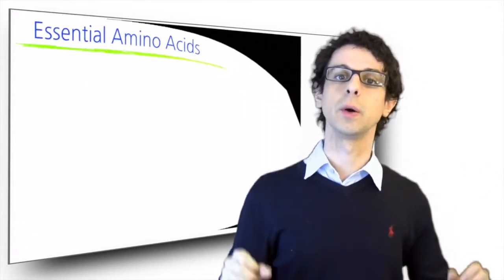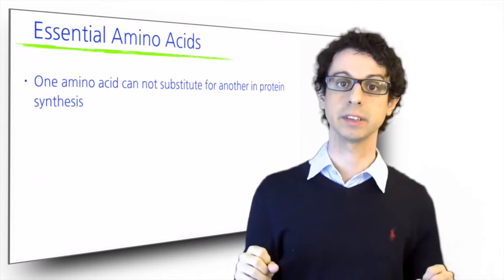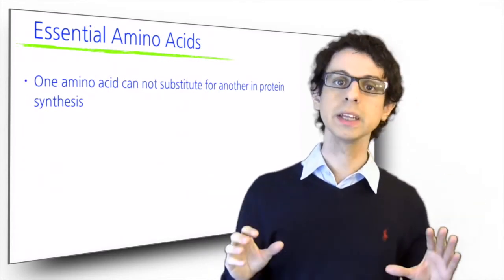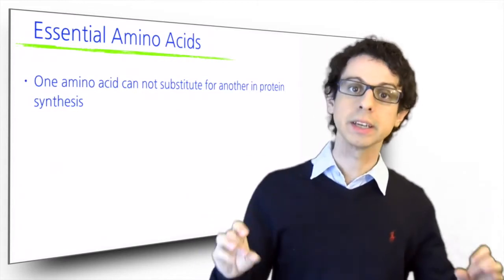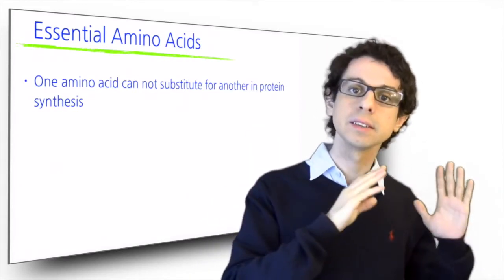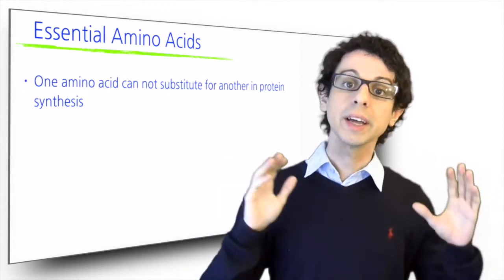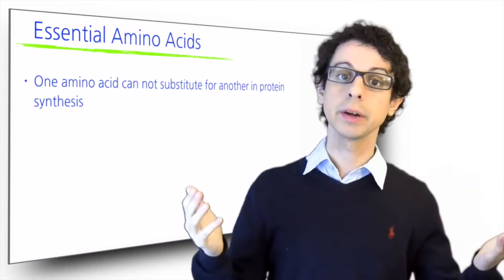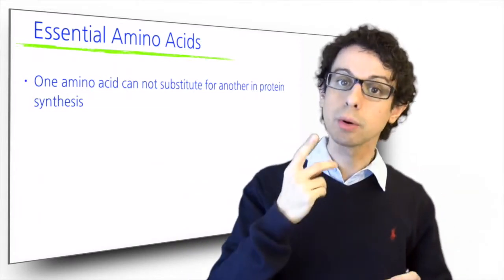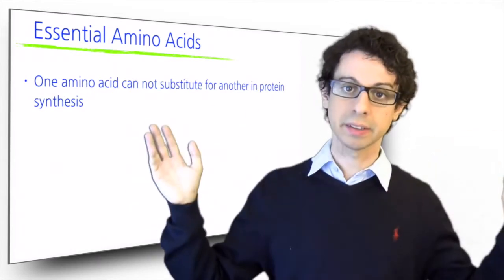You already know that one amino acid cannot substitute for another in protein synthesis. The code for building proteins is written with great precision in our DNA. For each protein, it tells us exactly what is the sequence of amino acids that need to be put together. We cannot just take an amino acid and put it in place of another one. Remember what happened in sickle cell anemia? There was just one wrong amino acid in the whole sequence, and that was enough to mess everything up.